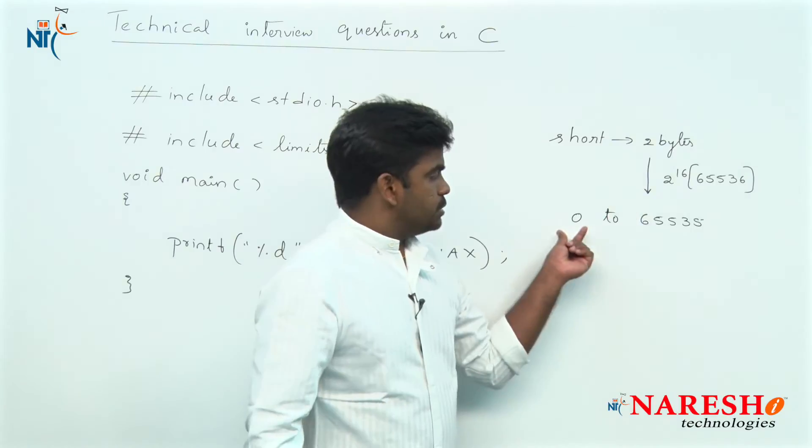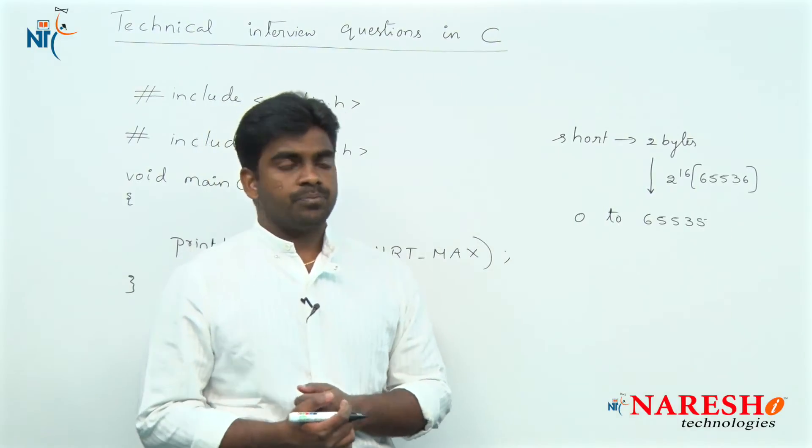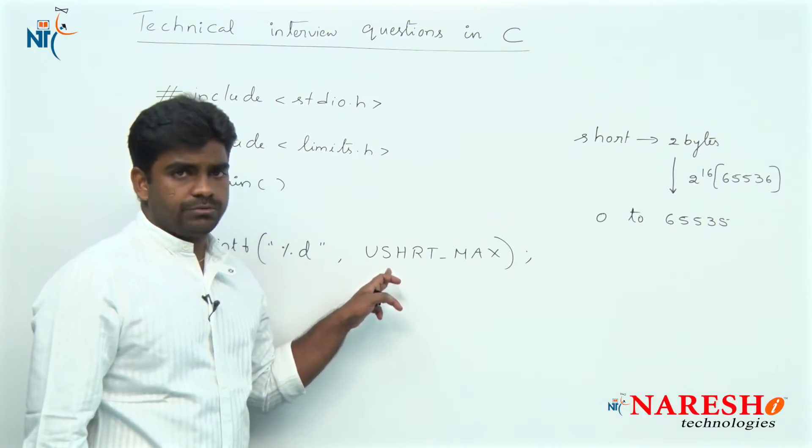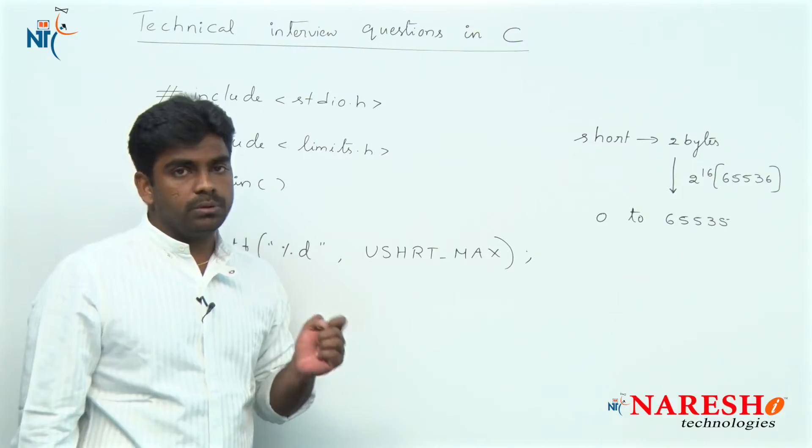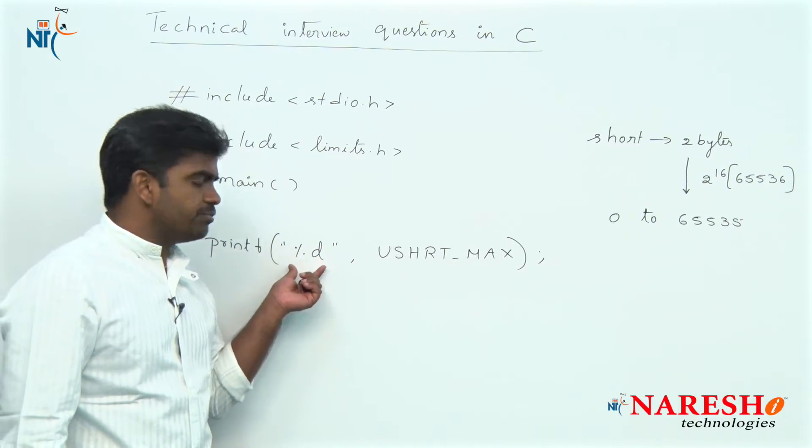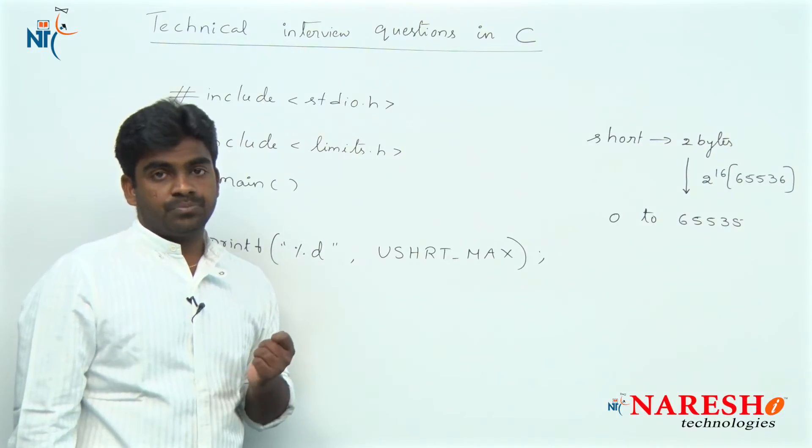If you start with 0 the value is 65,535. It has to print 65,535, but the problem is we have given percentage d. This is not the format specifier of unsigned, it is the format specifier of signed.